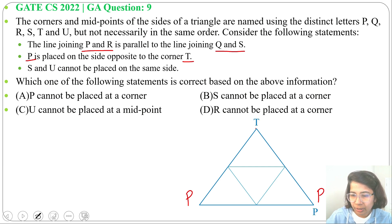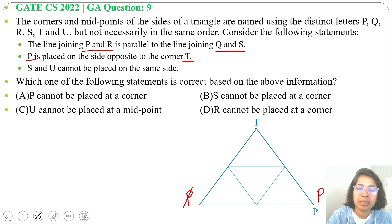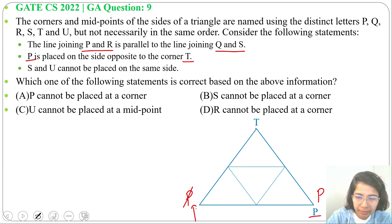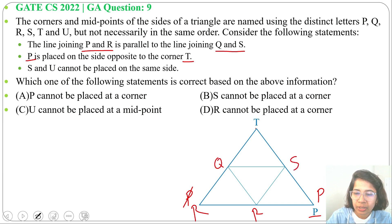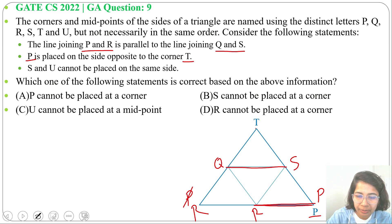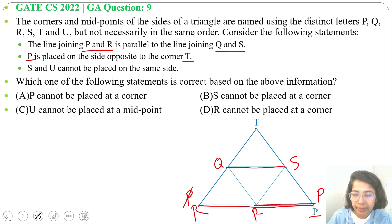Let me consider P here at a corner position. First statement: P and R should be parallel to Q and S — the line joining P and R is parallel to the line joining Q and S. Here it's P. We can consider R here at a midpoint or at a corner. Let's say this is Q and this is S, so Q and S should be parallel to P and R.